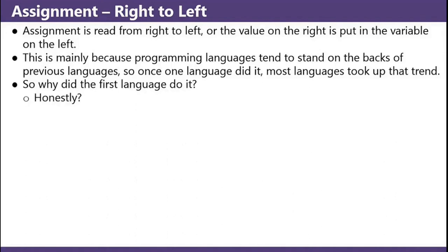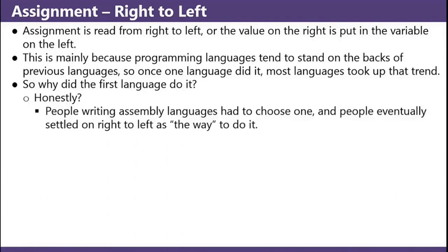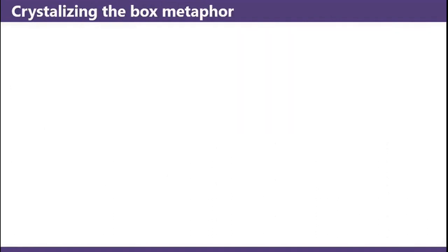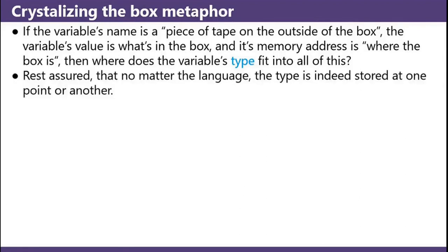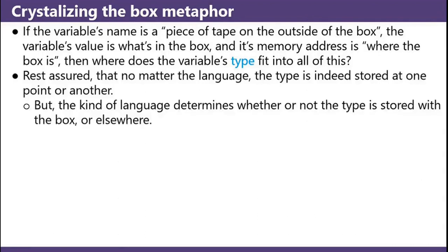So why did the first language do it? Honestly, people writing assembly languages had to choose one, and people eventually settled on right to left as the way to do it. If the variable's name is a piece of tape on the outside of the box, the variable's value is what's in the box, and its memory address is where the box is, then where does the variable's type fit in all of this? Rest assured that no matter the language, the type is indeed stored at one point or another, but the kind of language determines whether the type is stored within the box or elsewhere.